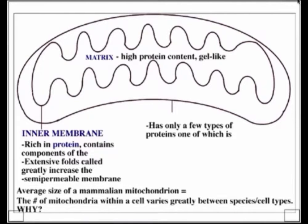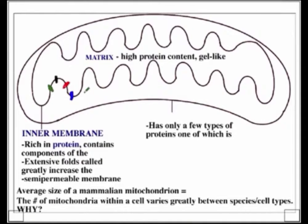The components of the electron transport chain span the inner mitochondrial membrane. Those four important components that make up the ETC — complexes 1, 2, 3, and 4 — can have multiple copies all along this inner mitochondrial membrane. And it's not just components of the ETC that span that membrane. Remember how pyruvate had to get transported into the matrix? There are also other transporters like the malate transporter. That's why the inner membrane has such an amazingly high protein content.